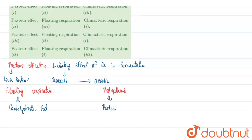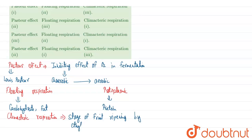The third term is climacteric respiration. Climacteric respiration is the stage of fruit ripening. It can be enhanced by the production of ethylene hormone — ethylene is the main fruit-ripening hormone. During this phase, there is an increase in cellular respiration to produce more energy.